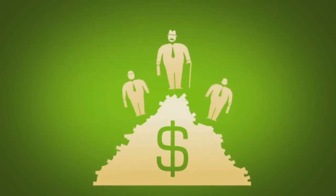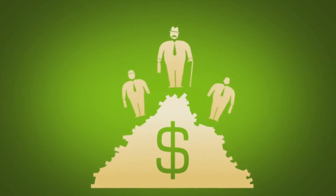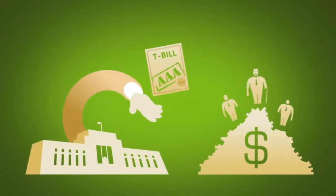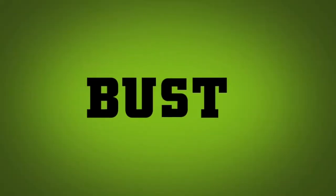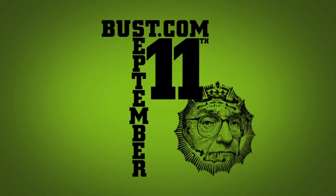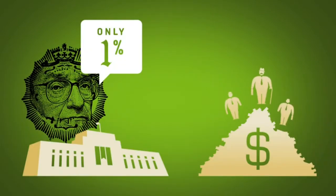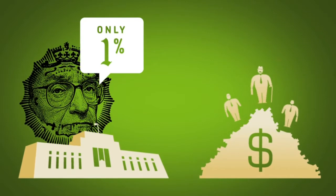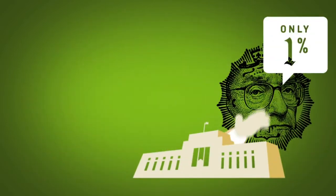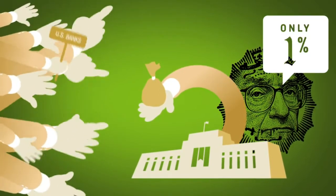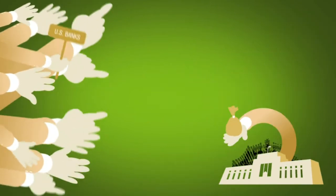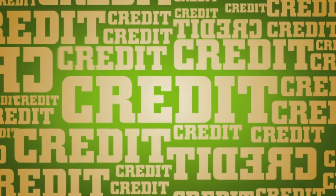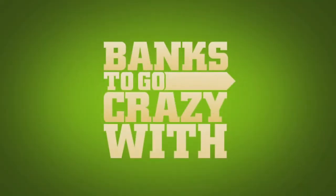Years ago, the investors are sitting on their pile of money looking for a good investment to turn into more money. Traditionally, they go to the US Federal Reserve where they buy Treasury bills, believed to be the safest investment. But in the wake of the dot-com bust and September 11th, Federal Reserve Chairman Alan Greenspan lowers interest rates to only 1% to keep the economy strong. 1% is a very low return on investment, so the investors say no thanks. On the flip side, this means banks on Wall Street can borrow from the Fed for only 1%. Add to that general surpluses from Japan, China, and the rest, and there's an abundance of cheap credit.